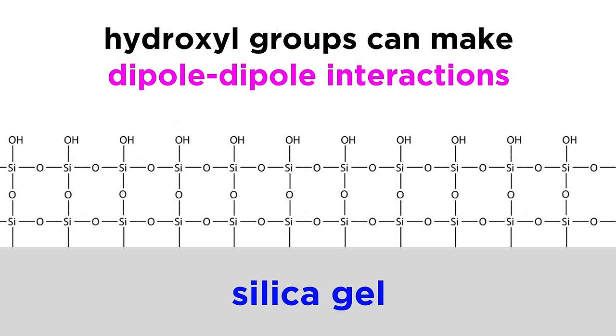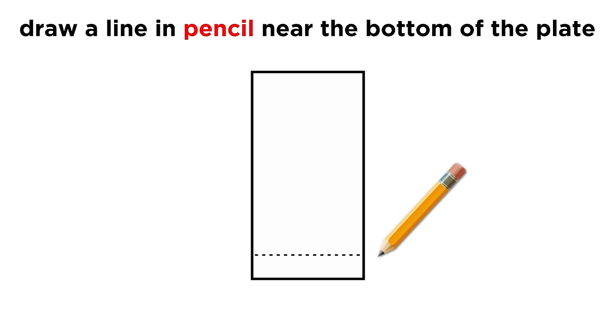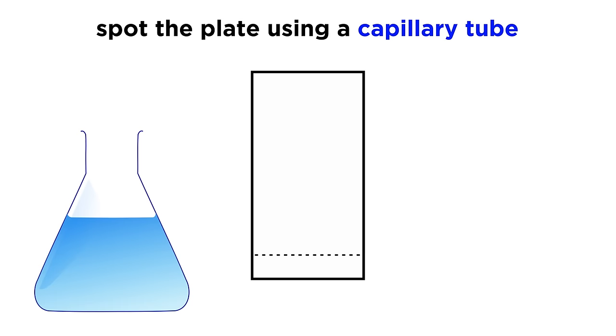These of course are polar, and can participate in dipole-dipole interactions with other polar substances. Now in order to perform the separation, we will draw a line in pencil fairly near the bottom of this plate, right on the silica. Then we take the solution containing the components to be separated, and insert a capillary tube. Some of the solution will rise up into the tube by capillary action.